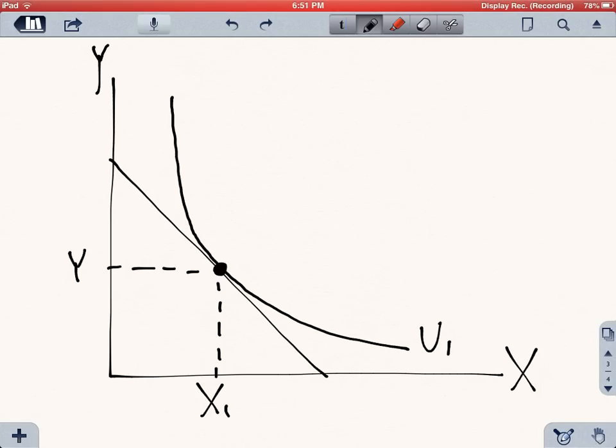So let's start with the initial utility maximizing position, and that's the position in which the indifference curve is just tangent to the budget line. And at that point you're consuming x1, y1. Now let's say the price of x increases.